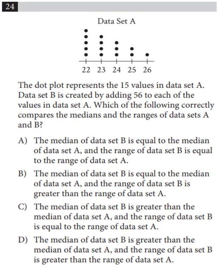Here we have an SAT question dealing with medians and ranges. The dot plot represents the 15 values in data set A. Data set B is created by adding 56 to each of the values in data set A. Which of the following correctly compares the medians and the ranges of data sets A and B?